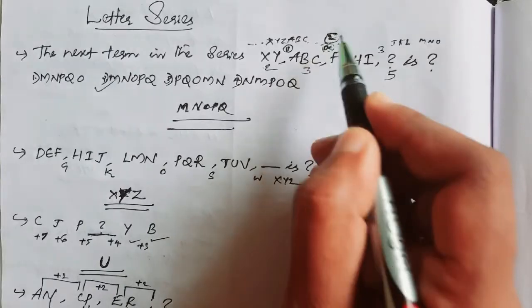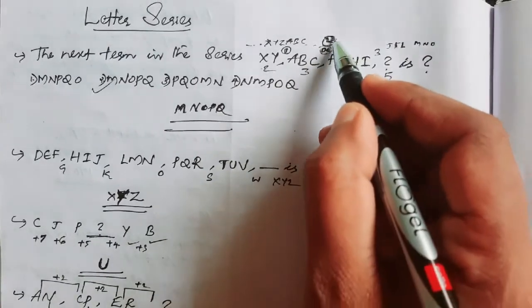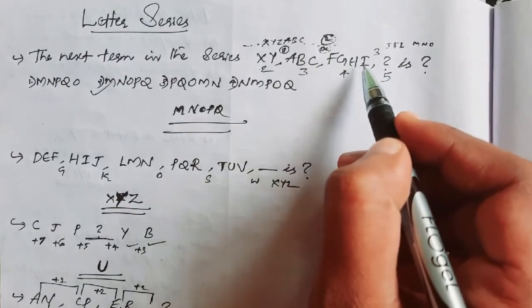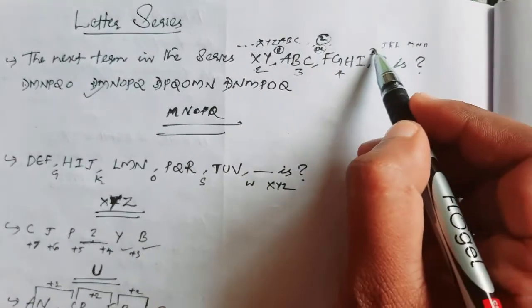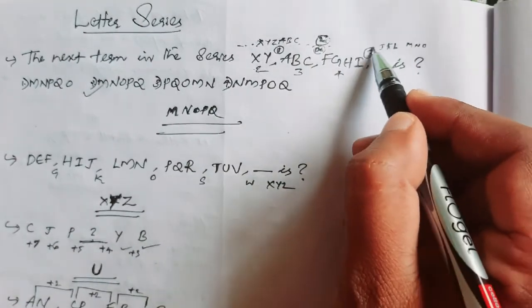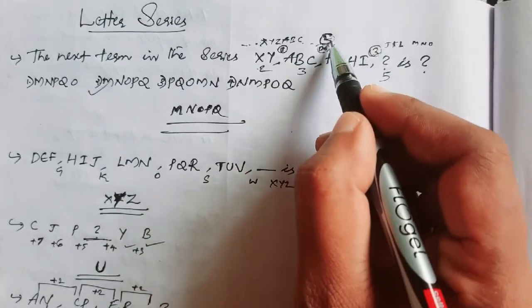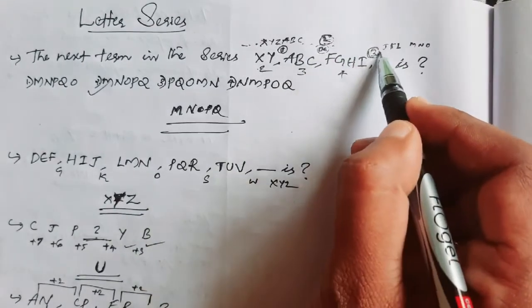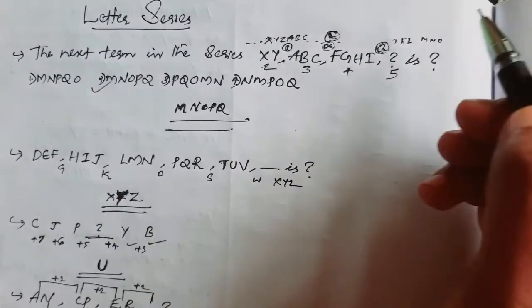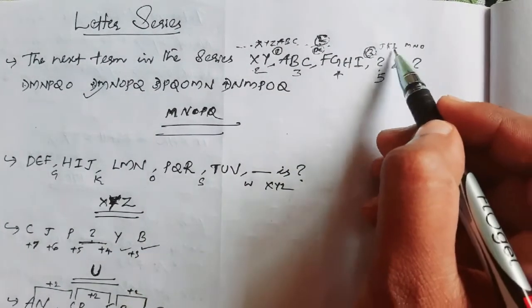So there are 2 letters missing. And when we solve it, then there are 2 missing, which means next there will be 3 missing. That gives us J, K, L as the next set.